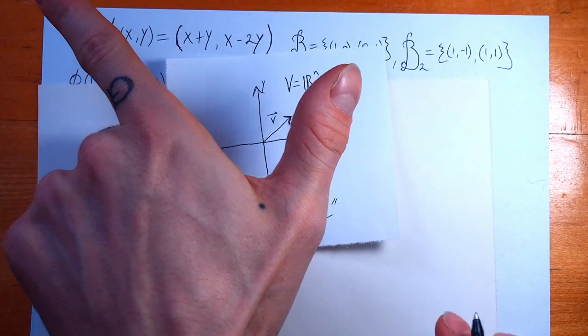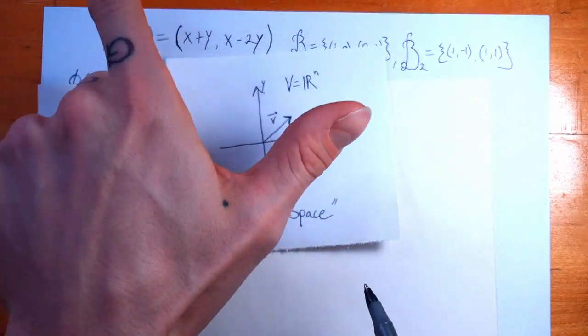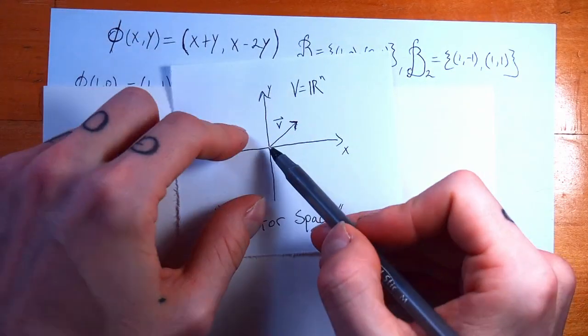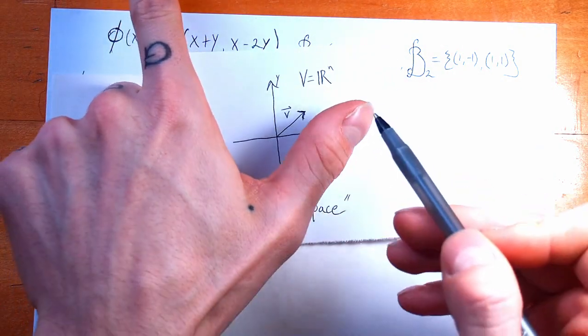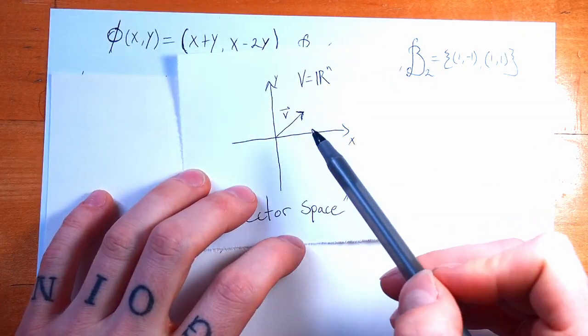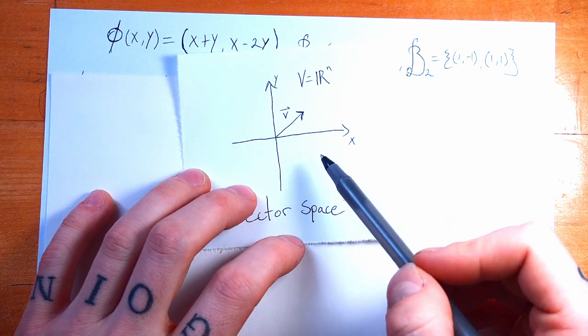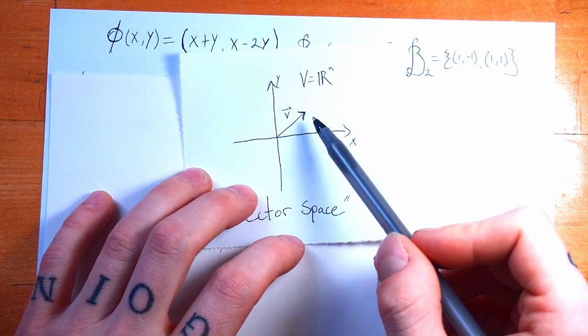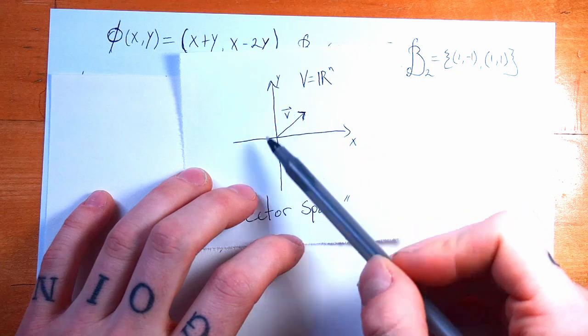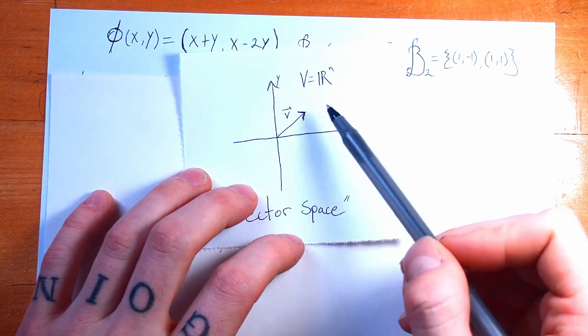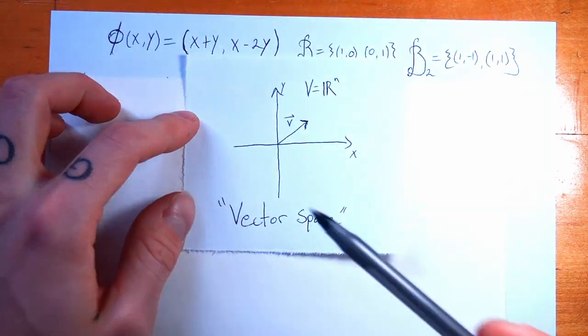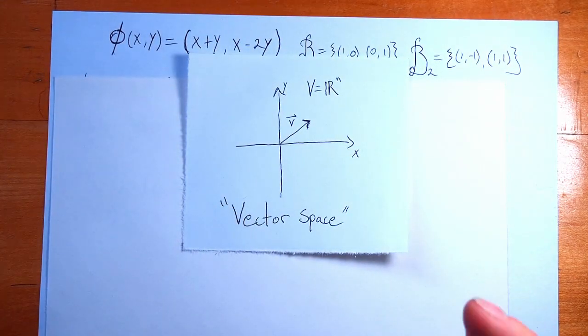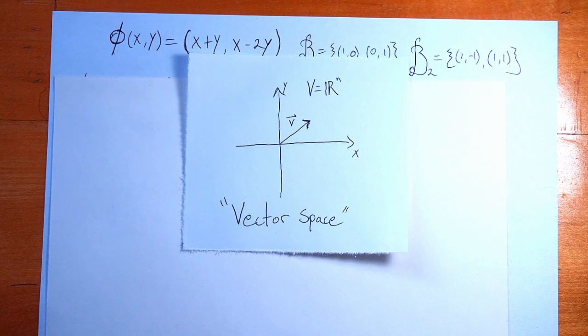If I had chosen a different basis, it's possible that I could have been more clever and lined it up, so there would only be an x component to my vector right here, but it would still be the same vector. Even though the numbers that I write down in my array are not the same, it's still the same vector. That's because changing basis is just a linear transformation.